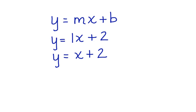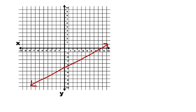Let's look at another one. Can you write the equation of this line? Remember, you need the slope and the y-intercept. This line crosses the y-axis at negative 5, so we can say that our y-intercept is (0, negative 5).